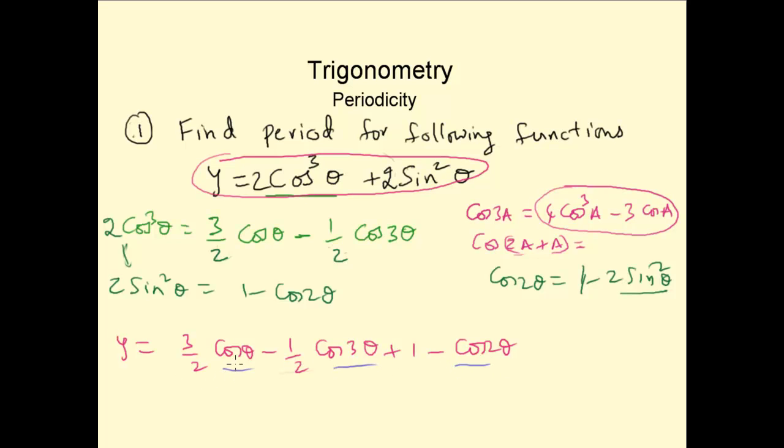What is the period for cos theta? The period for cos theta is 2 pi over 1, which is 2 pi. Period for cos 3 theta is 2 pi over 3. And the period for cos 2 theta is 2 pi over 2, which is pi.